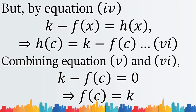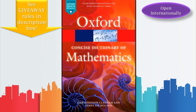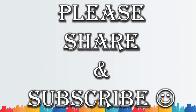Finally, by combining both cases — a less than B and a greater than B — we have proved that F(C) equals K. That concludes the proof. I hope you enjoyed and learned something from this proof. I will see you all in my next video. Bye.